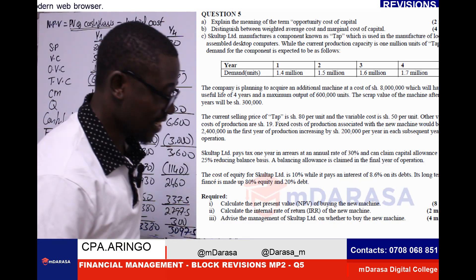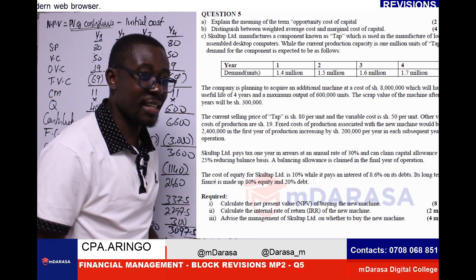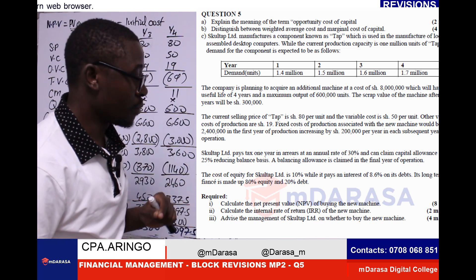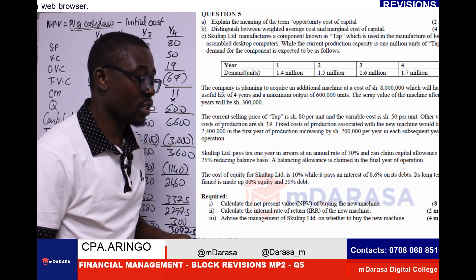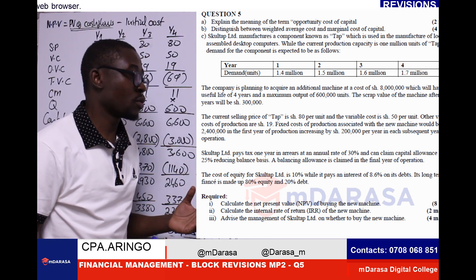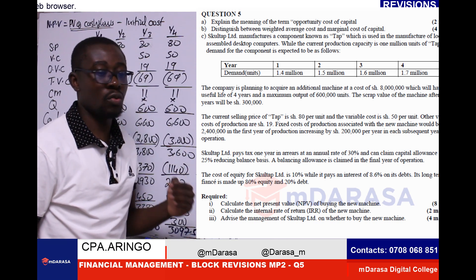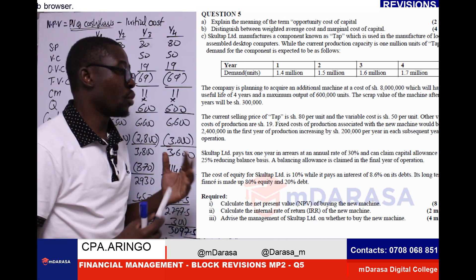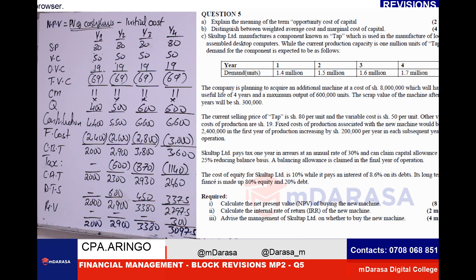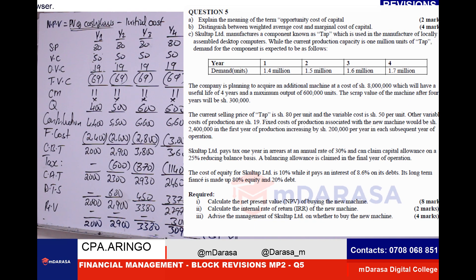Hello learners, welcome again. This is a continuation of what you were doing earlier. Remember this block revision model paper 2 that you were handling. In our previous class, we handled the first part of the question where we were asked for the net present value.